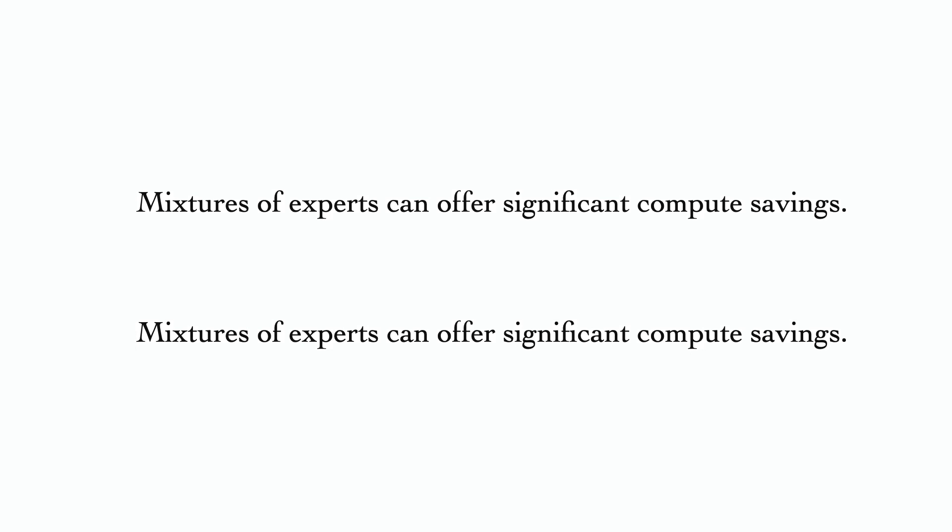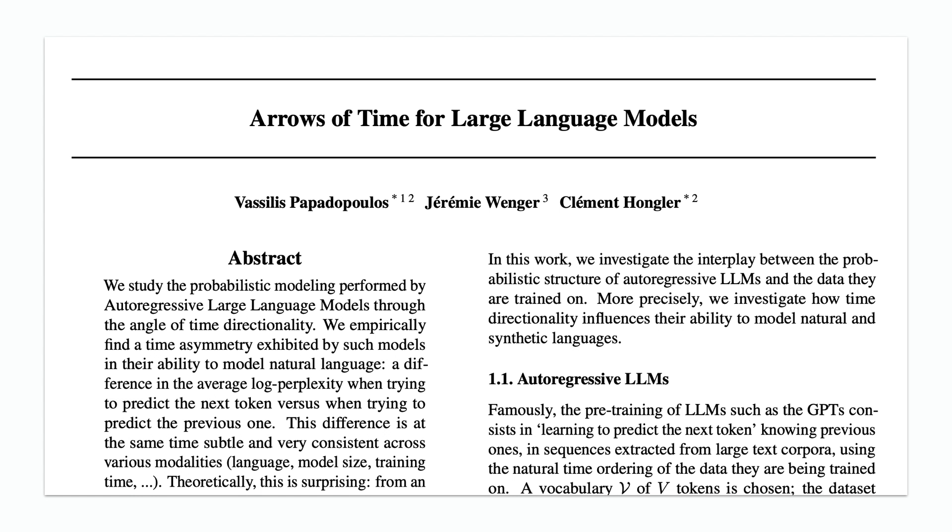But the actual informational content in a sequence of text is the same whether we produce it forwards or backwards, or in some other arbitrary order. And so we might assume it's just as easy for a model to learn to generate the same text in a different order. In this video, we're going to look at a paper that suggests this is actually not the case.